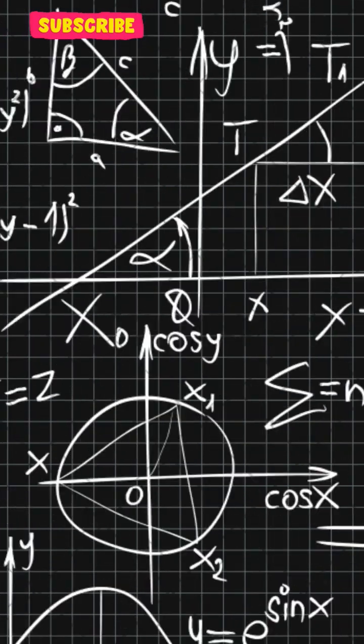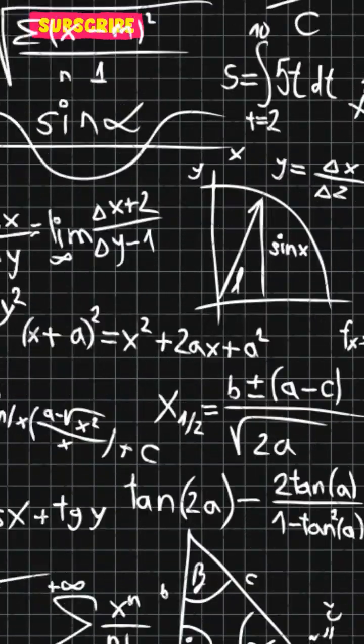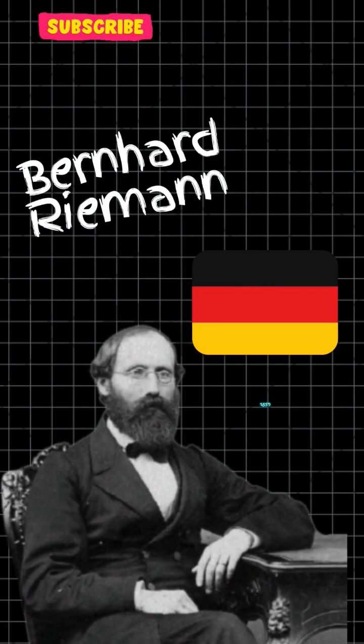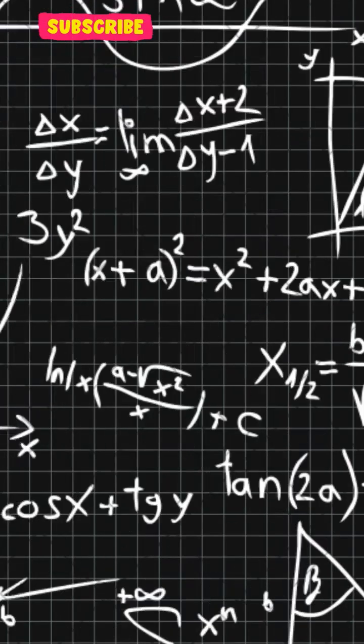The Riemann hypothesis is one of the most famous unsolved problems in mathematics proposed by German mathematician Bernard Riemann in 1859. Let's see what it is in less than a minute.